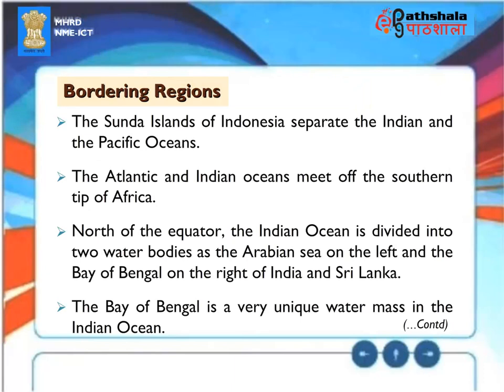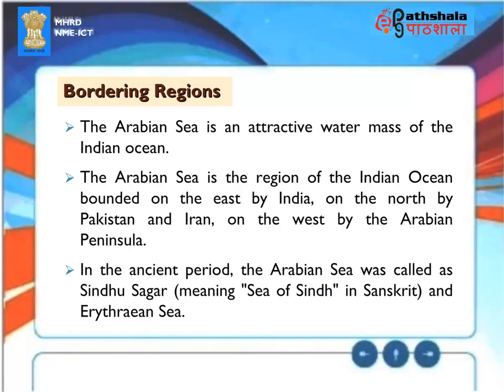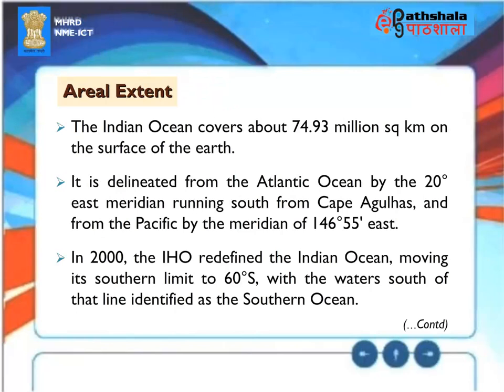Bordering Regions. The Sunda Islands of Indonesia separate the Indian and the Pacific Oceans. The Atlantic and Indian Oceans meet off the southern tip of Africa. North of the equator, the Indian Ocean is divided into two water bodies, as the Arabian Sea on the left and the Bay of Bengal on the right of India and Sri Lanka. The Bay of Bengal is a very unique water mass in the Indian Ocean. The Arabian Sea is the region of the Indian Ocean bounded on the east by India, on the north by Pakistan and Iran, on the west by the Arabian Peninsula. In the ancient period, the Arabian Sea was called as Sindhu Sagar, meaning Sea of Sindh in Sanskrit, and Erythrean Sea.